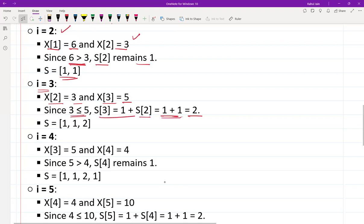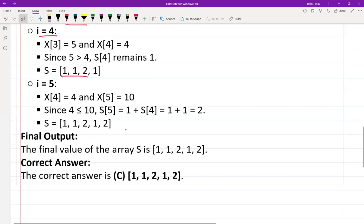When i will be 4, at the end S will be [1, 1, 2, 1]. And when i will be 5, at that time S will be [1, 1, 2, 1, 2].